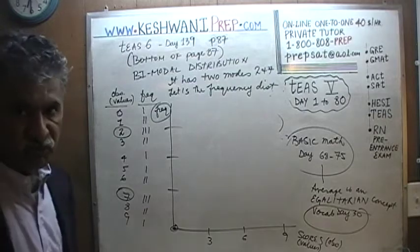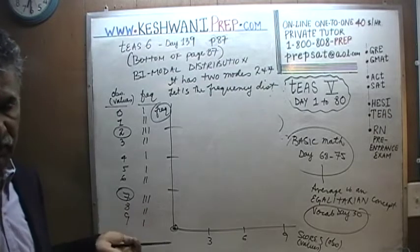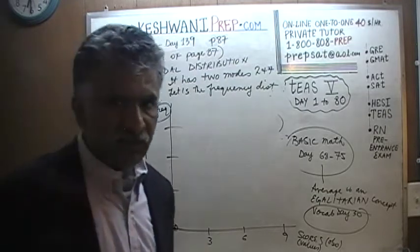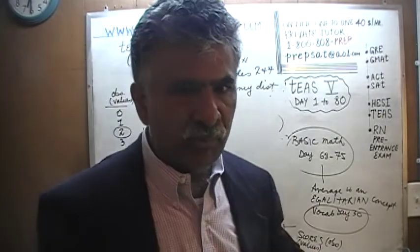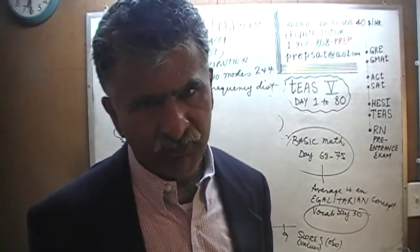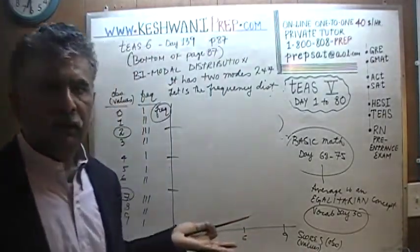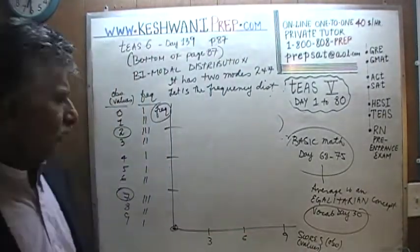Typically you wouldn't say 'scores' because it's not always scores — it could be anything. It could be income, height, weight. So we talk about the values or the observations. Here, it is a score.